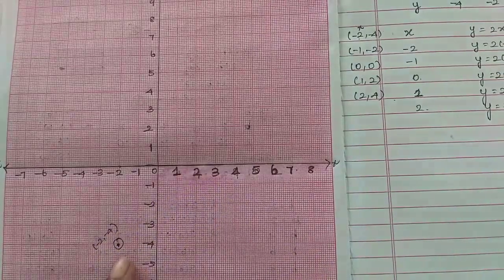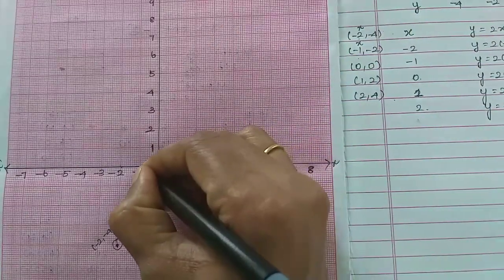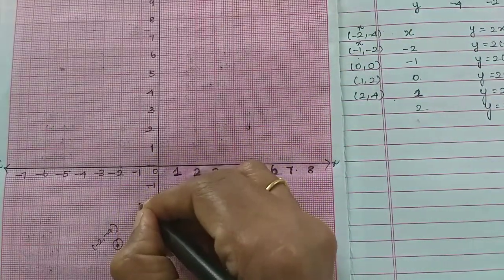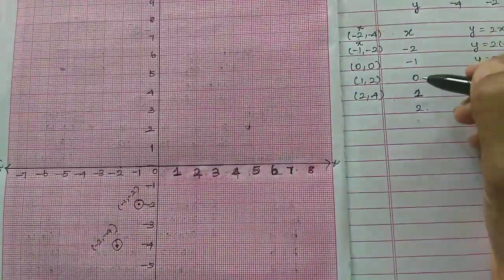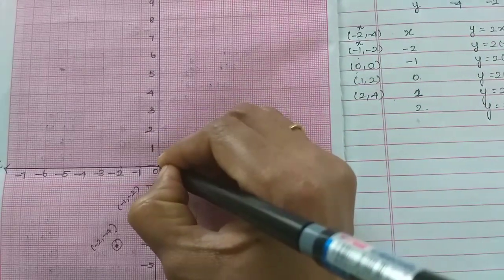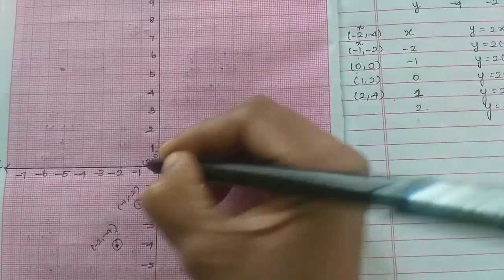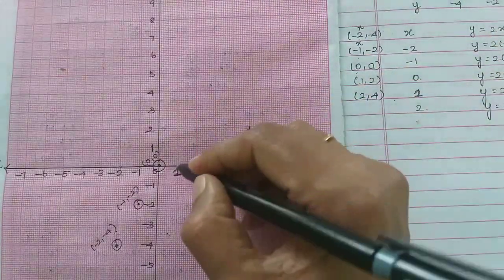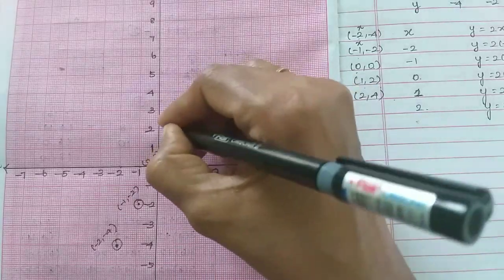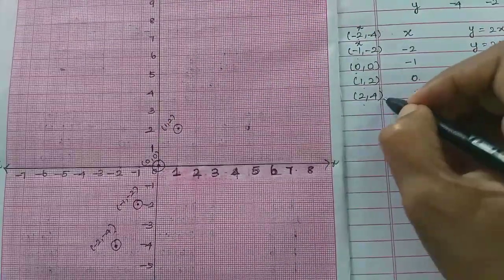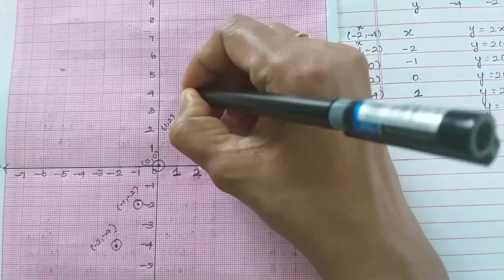You will write down the point and the name. Then minus 1, minus 2: in the x-axis, minus 1 is here, and that is minus 2. So this is minus 1, minus 2. Next, 0, 0 — that is the origin, it is the center. So this is 0, 0. Next, 1, 2: x-axis is 1 and y-axis is 2, so this is 1, 2. Next, 2, 4: x-axis is 2 and y-axis is 4, so this is 2, 4.